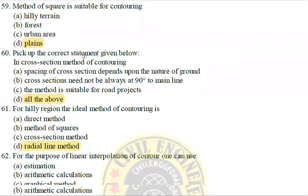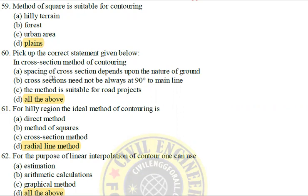Next: Pick the correct statements about the cross-sectional method of contouring: The spacing of the cross-sections depends upon the nature of the ground. Cross-sections need not always be at 90 degrees to the main line. This method is suitable for road projects.